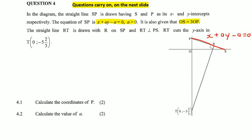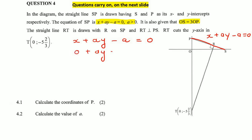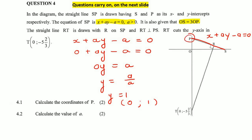Calculate the coordinates of P for two marks. P is on the y-axis, so it's the y-intercept of line SP. To find the y-intercept, make x = 0 in the equation: 0 + ay − a = 0, so ay = a, dividing both sides by a gives y = 1. Therefore the coordinates of P are (0, 1).